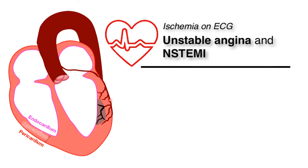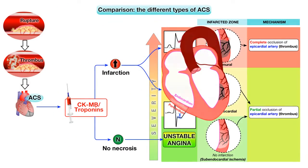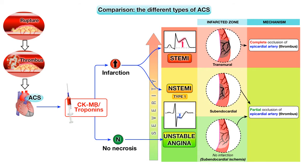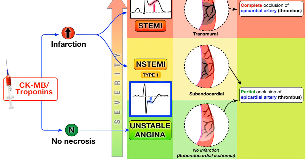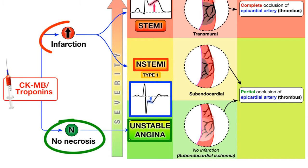Let's discuss signs of subendocardial ischemia on EKG, which may be seen in patients presenting with unstable angina and NSTEMI. Both unstable angina and NSTEMI may have changes on EKG. However, by definition, unstable angina will have negative biomarkers such as CKMB or troponins, whereas NSTEMI will have positive biomarkers.